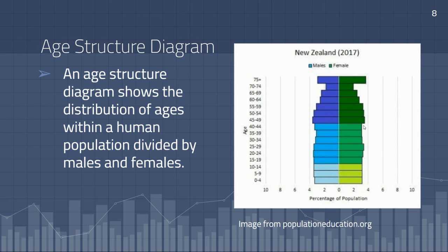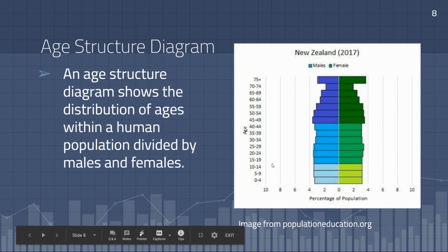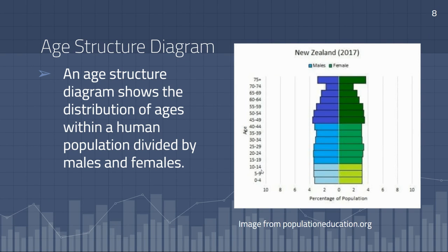If we see more of a triangle shape, with a very large proportion of individuals in the lower age categories — their pre-reproductive and reproductive years — that shows the population is likely growing. When those younger individuals have kids in the future, they will continue to cause an increase in population growth. On the flip side, an upside-down triangle shape with a very large proportion of older individuals and a much smaller proportion of younger individuals typically shows a decline in population.